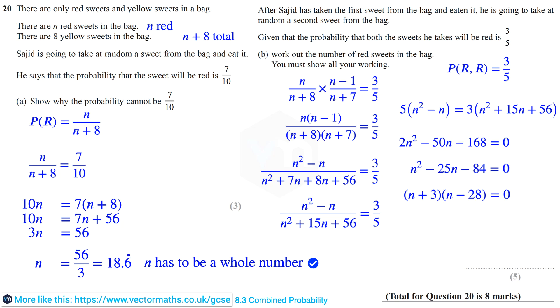Ordinarily the solutions would be N equals negative 3 and N equals 28. But of course N cannot be negative given the context of the question. Therefore N must be 28. There were 28 red sweets in the bag.